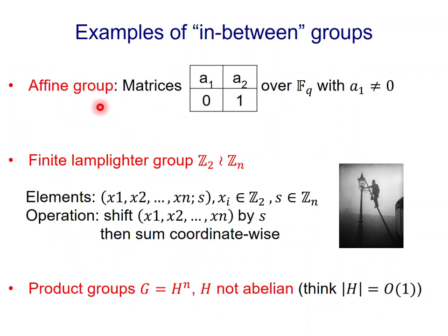The first example is the affine group. That's a group of 2x2 matrices which have entries A1, A2, 0, and A1, where A1 and A2 are in the finite field with Q elements, and A1 is not 0. Again, this group is neither almost abelian nor quasi-random.